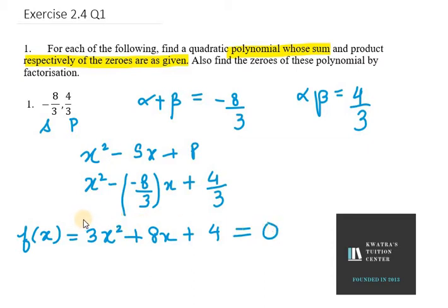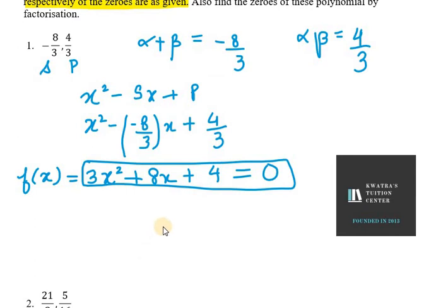Now we need to solve 3x square plus 8x plus 4 equals 0. In this case what we need to do is split the middle term, so first we take a and c, which is 3 into 4, so it will be 12.